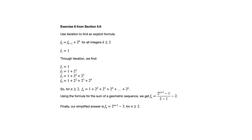With this explicit formula, if we wanted to know what F sub 20 is, we could do that without having to generate all of the terms up to that point. Let's move on to the next example, which is exercise 22.